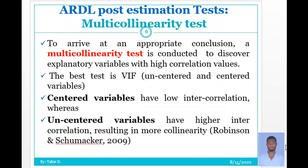The other pre-estimation test is multicollinearity. To arrive at an appropriate conclusion, a multicollinearity test is conducted to discover explanatory variables with high correlation values. The best test is the Variance Inflation Factor (VIF). VIF can be classified into two types: uncentered and centered variables. Centered variables indicate that variables have low inter-correlation, while uncentered variables have higher inter-correlation, resulting in more collinearity. This is confirmed by the authors in 2009.